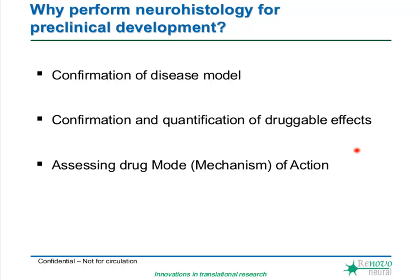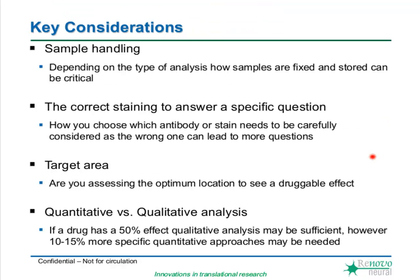The second and third points go hand in hand when looking for data to include in an IND application: is my drug having a significant therapeutic impact on disease, and how — what are the mechanisms of action under physiological conditions? There are four key categories we think about to ensure the best targeted, high-quality histology to meet individual project needs: sample handling, the best staining decisions, choosing your region of interest, and the best approach to deal with all the information generated.